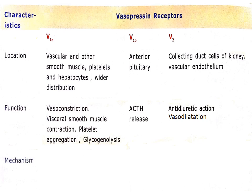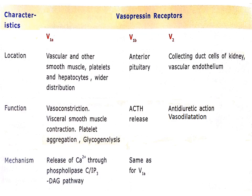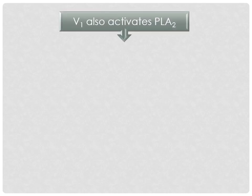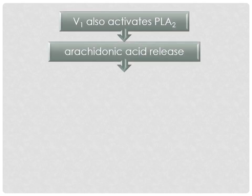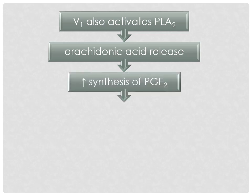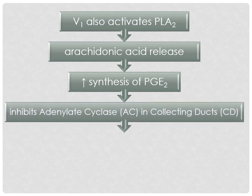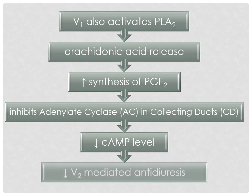In terms of mechanism, all three are G-protein coupled receptors. V1A and V1B are Gq type and follow the IP3 pathway, while the V2 receptor is Gs type and increases cyclic AMP by activation of adenylate cyclase in collecting duct cells of the kidney. The reason V1 causes opposite effects to V2 is that V1 receptors also activate phospholipase A2, causing release of arachidonic acid and increased synthesis of prostaglandins, which tends to reduce cyclic AMP levels and thus blunts V2-mediated antidiuresis.